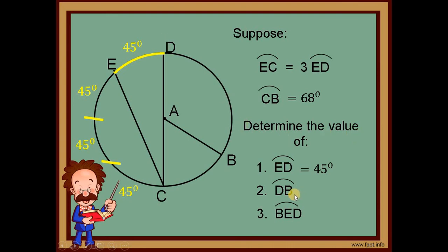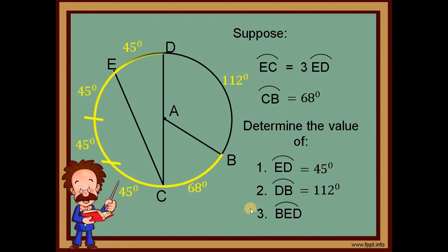For number two, arc DB: we know arc CB is 68 degrees, and arc DBC is a semicircle equal to 180 degrees. So arc DB equals 180 minus 68, which is 112 degrees. For number three, arc BED: this arc spans from B through E to D. Its measure is the sum of arc BC (68°), arc CE (45°), arc ED (45°) on one side — or simply 180 plus 68 — which gives us 248 degrees. Therefore arc BED equals 248 degrees.